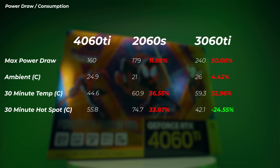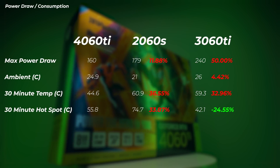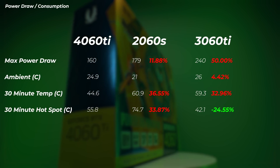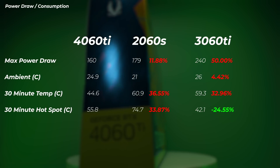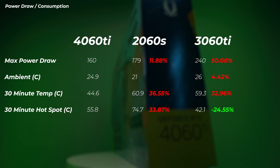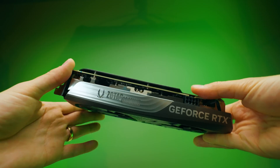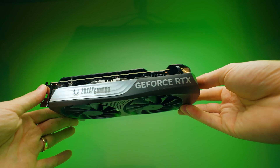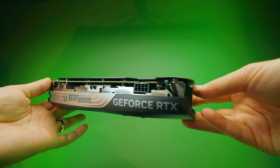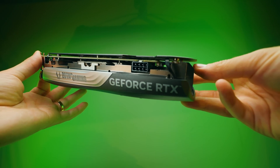Looking at power draw: the 4060 Ti uses only 160W compared to 179W for the 2060 Super and 240W for the MSI RTX 3060 Ti (slightly overclocked). This is a dual-fan card that is very well cooled and doesn't need much cooling performance — it actually runs better thermally than the larger 2060 Super. One more positive: it uses a standard PCIe 8-pin connector with no 12V high-power connectors, so no adapters needed.